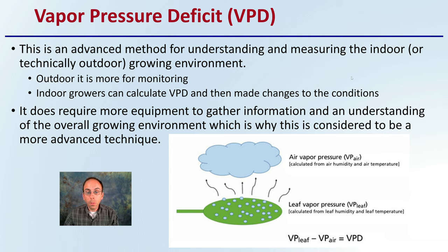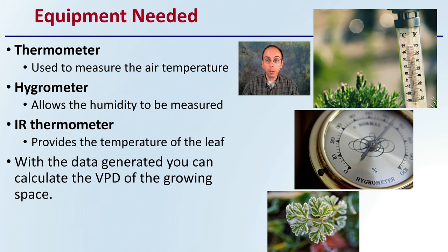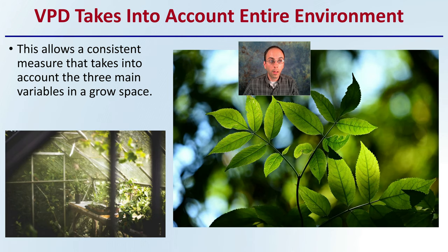We also have the vapor pressure of the air taken into consideration, the leaf vapor pressure, and together these are used to get the VPD — the vapor pressure deficit between those two. The equipment you need includes a thermometer, because you need to have an idea of what the air temperature is. You also need a hygrometer, which measures the humidity in the area, and an infrared IR thermometer, because that is going to be used to provide the temperature of the leaf. With the data generated, you can calculate the VPD of the growing space, keeping in mind that the VPD does take into account the entire environment.